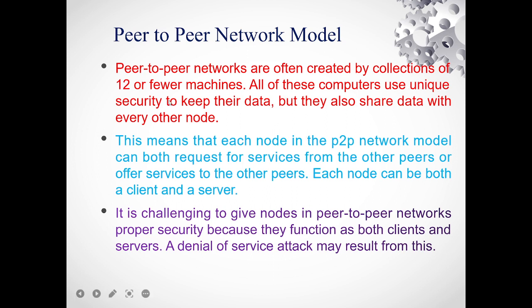All computers use unique security to keep their data, but they also share data with every other node. Each node in this network model can both request services from other peers and offer services. From one computer you connect to another, then to a third — so you can both make requests and offer services.